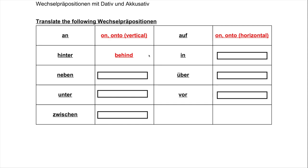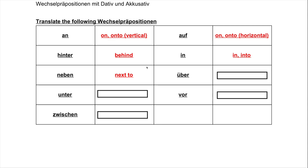'Hinter' means 'behind' — pretty straightforward. If you're going behind something, that's accusative. If you are already there, that's dative. 'In' is the easiest one; it just means 'in' or 'into,' especially when you're going from one place to another with the accusative case. 'Neben' means 'next to.' If you're going up to something and going to be next to it, that uses the accusative. If you are already there, that uses the dative.